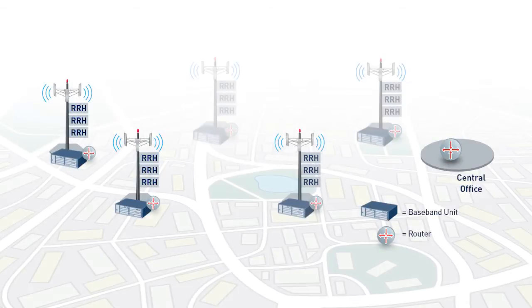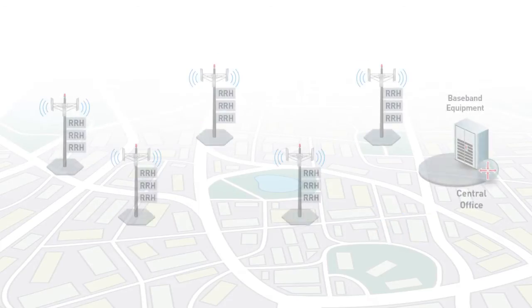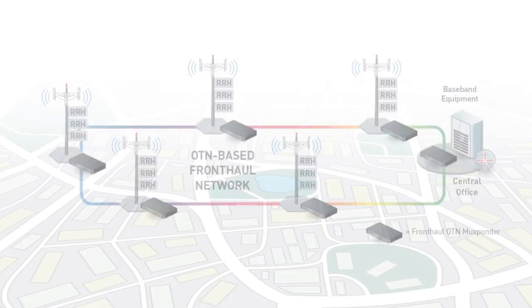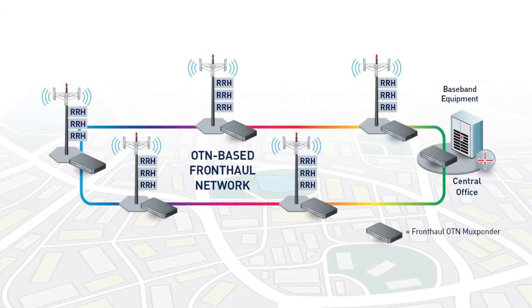Let's take a closer look at the requirements for a fronthaul network and how PMC's solution measures up. In the CRAN architecture, baseband processing units for multiple macro cells and small cells are moved out of the cell site and into a central location. By doing so, CRAN promises to reduce total cost of ownership while enabling mobile operators to take full advantage of the capacity gains offered by small cells and carrier aggregation.